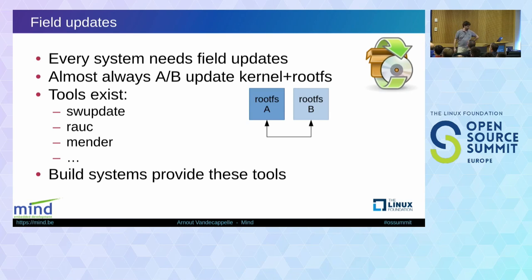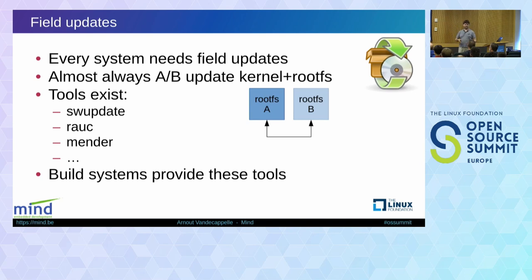So now going to the missing things in embedded build systems. The first one is field updates. When you deploy a system, every system needs to have a way of doing field updates — there is simply no way that you can deploy something and hope it's going to work forever. This is usually called over-the-air update, but sometimes there are different mechanisms like USB media. Almost always the approach chosen is an A-B update: having two copies of the root filesystem, the kernel, device tree, and other supporting materials, and swapping between them. If the new system doesn't boot, you fall back to the old one.